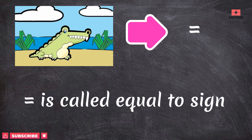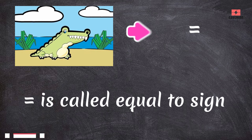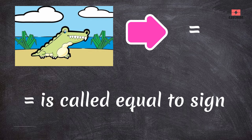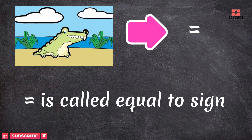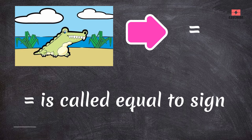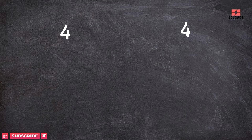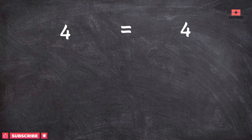Remember, when the crocodile is confused and does not open his mouth, this sign is called the equal-to sign. Look at these numbers: four and four. Both numbers are the same, so the crocodile is confused as to which number to eat and will not open the mouth.